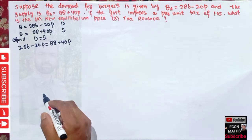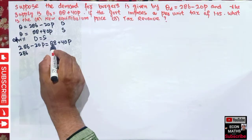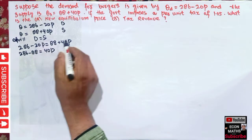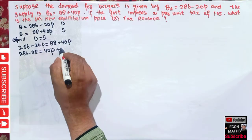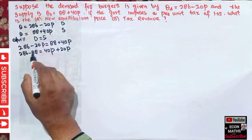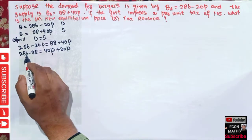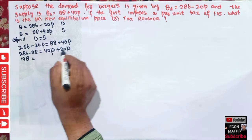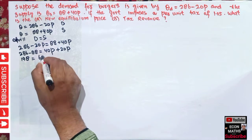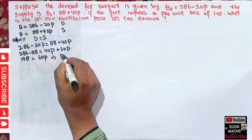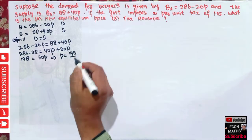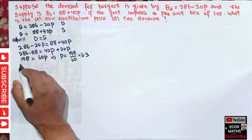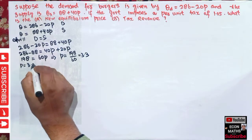Setting demand equal to supply: 286 − 20P = 88 + 40P. Transposing terms: 286 − 88 = 40P + 20P, which gives 198 = 60P. Therefore P = 198 ÷ 60 = 3.3. This is our equilibrium price, P = 3.3.